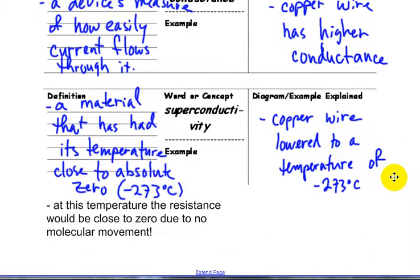Superconductivity. Material that has its temperature close to absolute zero. And it really allows electrons to flow freely and has very little resistance. So if I had copper wire and really lowered the temperature down, it could be superconductive.